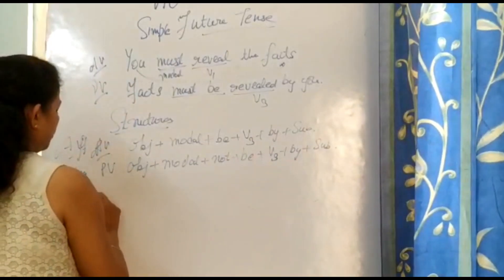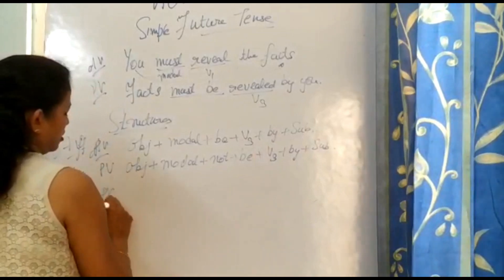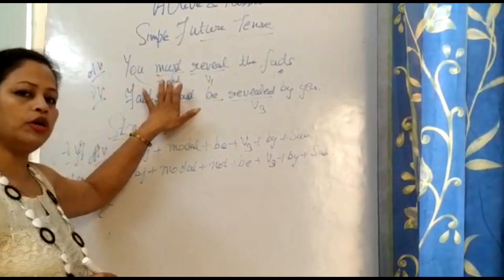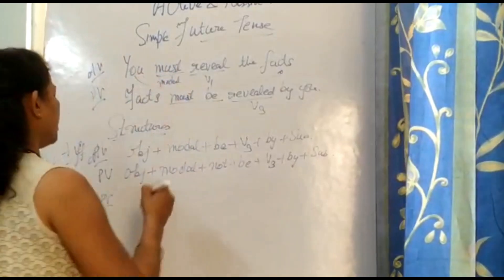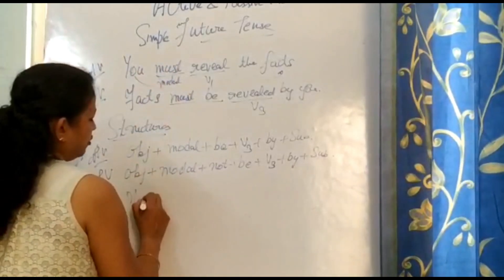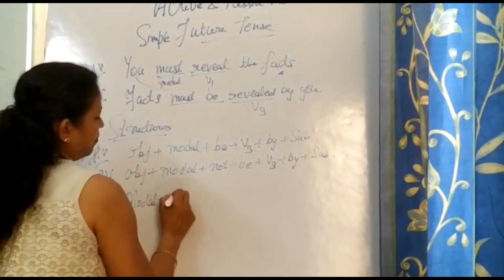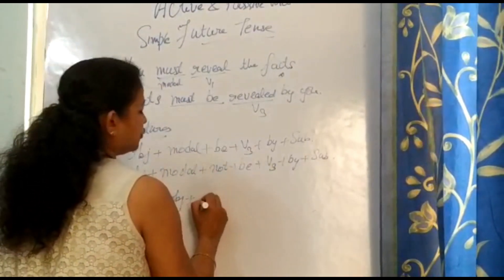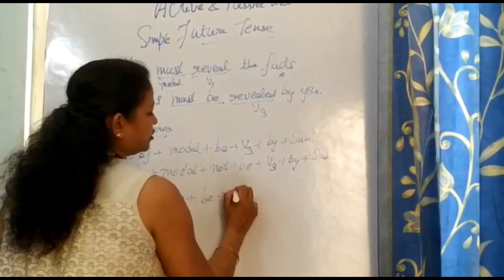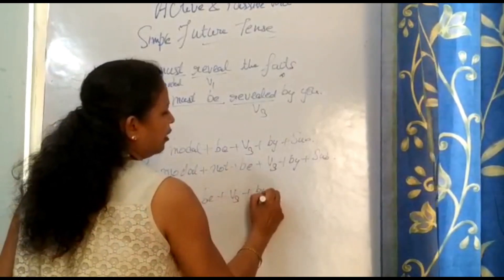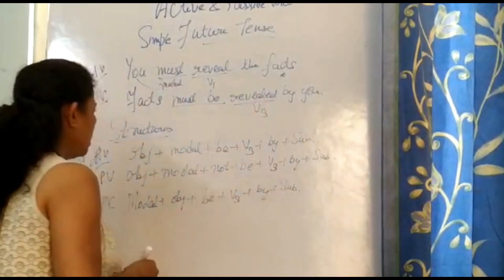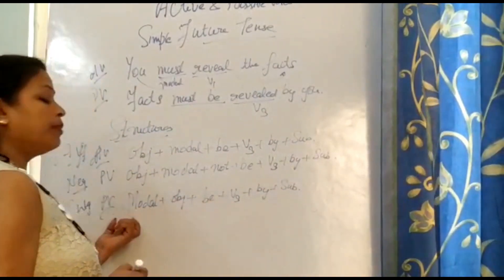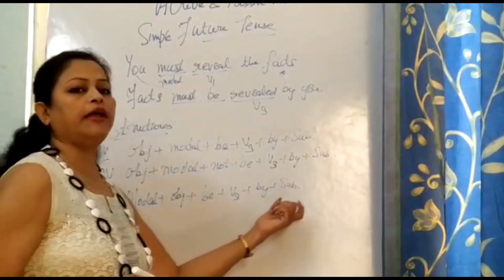Interrogative — the third kind of statement. We interchange the position of object and the auxiliary or modal. So we have: modal in the beginning + object + be + V3 + by + subject, followed by a question mark. That gives us: 'Must the facts be revealed by you?'